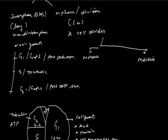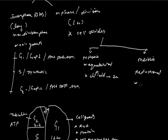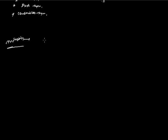Mitosis is an equatorial division because the diploid cell remains diploid. But meiosis is a reduction division because the diploid cell becomes haploid. Mitosis produces 2 cells, but meiosis produces 4 cells. Mitosis occurs in somatic cells and mainly 2 daughter cells are formed.